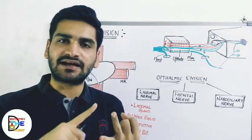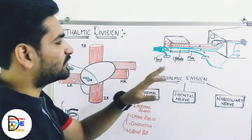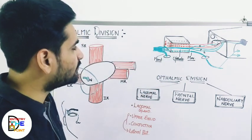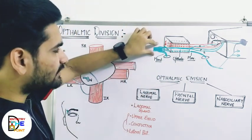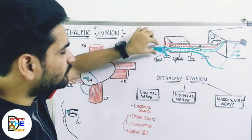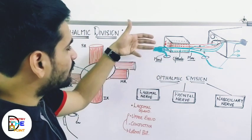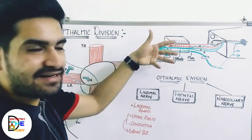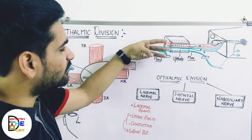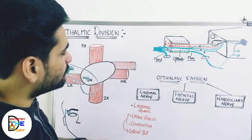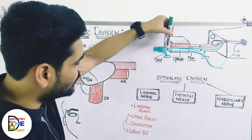So the three branches are: first will be lacrimal, second will be frontal, and third will be nasociliary. We will start with the lacrimal branch. The trigeminal ganglion is going to continue as the trigeminal nerve, which will produce three divisions. First will be ophthalmic, second will be maxillary, and third will be mandibular.